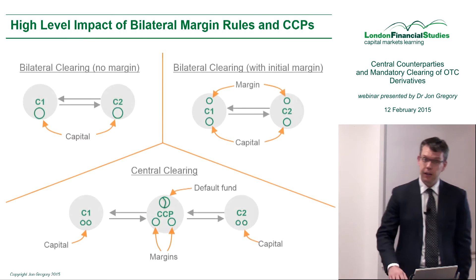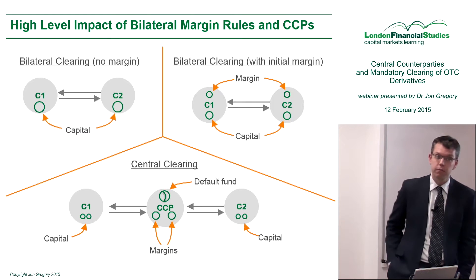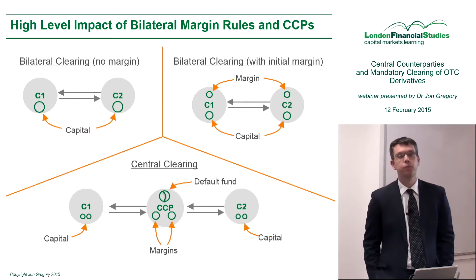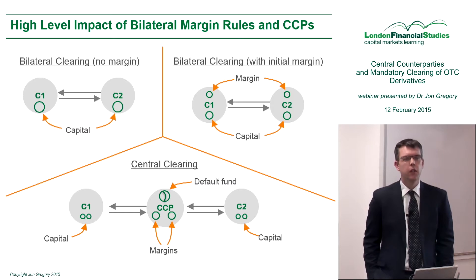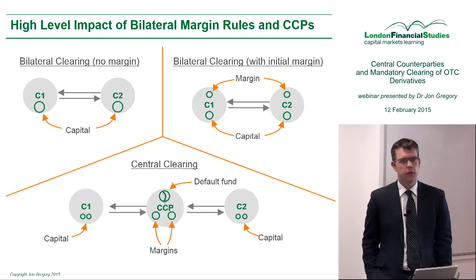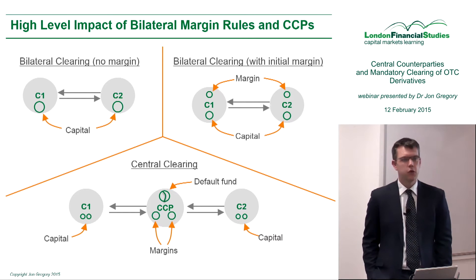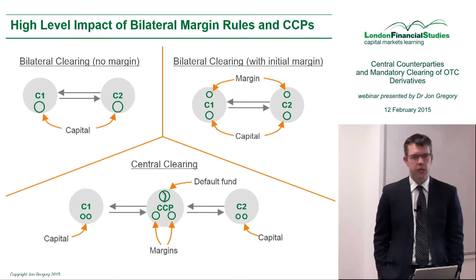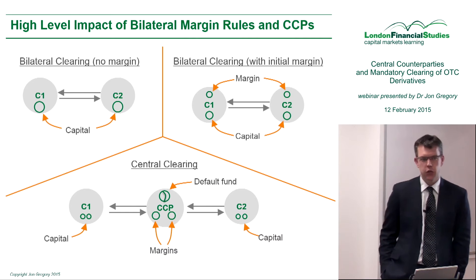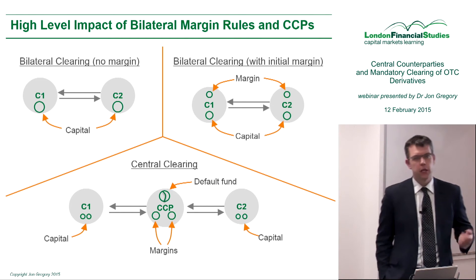Let me leave you with one small picture. This is a very simplified framework of how loss absorbency occurs in different markets. We've got three different markets: the first one is a bilaterally cleared market with no margin, no collateral — for example, two banks transacting with each other, C1 and C2, in this bilateral market on the top left.